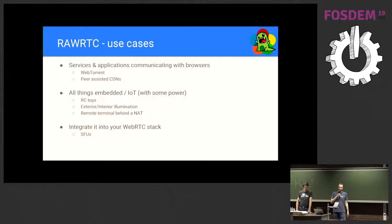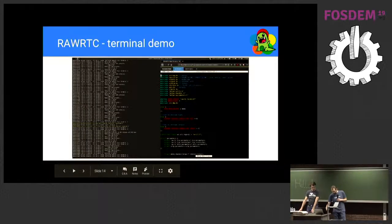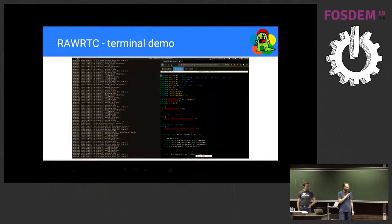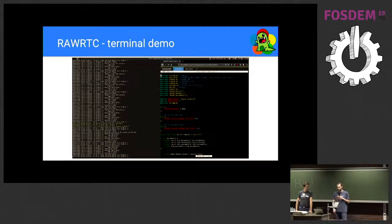You can also integrate raw RTC into an existing WebRTC implementation if you don't have a data channel stack yet. If you have ICE and DTLS in a selective forwarding unit, you can integrate raw RTC to add data channel support. One demo we built shows a browser opening multiple terminals and accessing the local terminal on a device using raw RTC — which is great because you can punch through NAT and access your device without forwarding any ports.